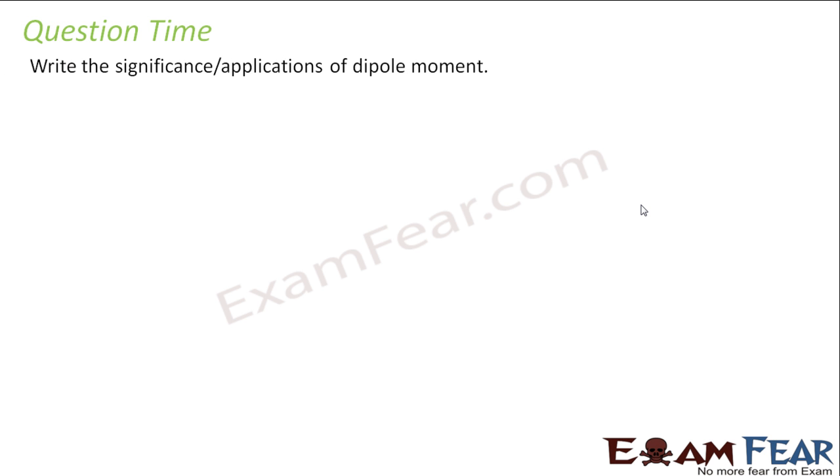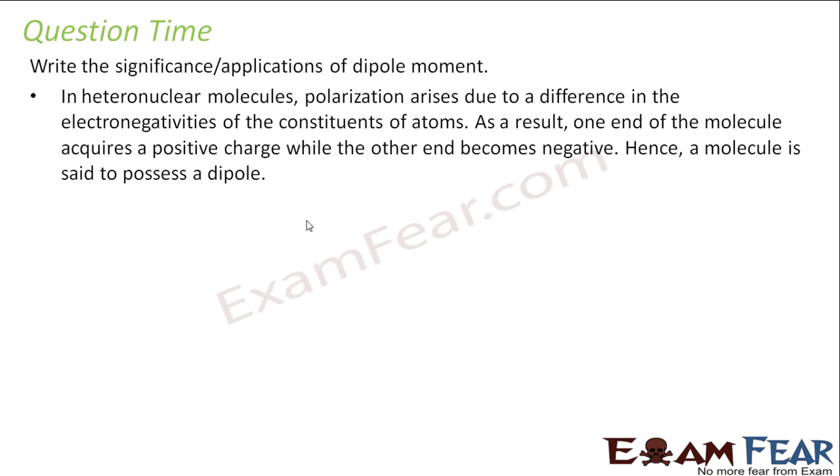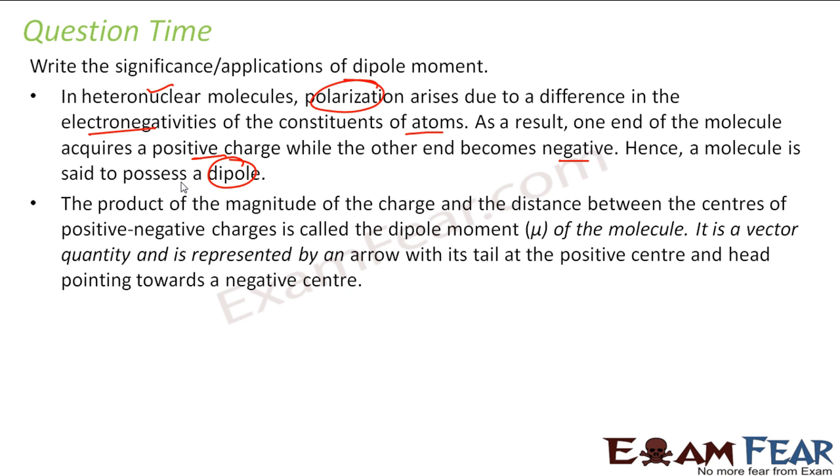What is the significance and application of dipole moment? So in heteronuclear molecule actually when we have this dipole moment, the polarization comes due to difference in electronegativity of the atoms. Because this one molecule, one atom acquires positive charge, other becomes negative. And thus the molecule is said to be dipole. Example you have seen this HF also. This gives negative charge, this gives positive charge. This is a dipole here.